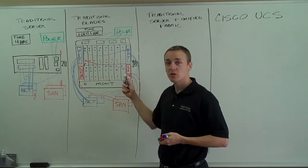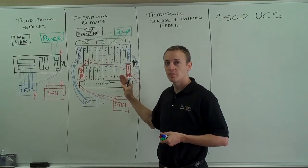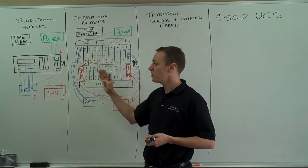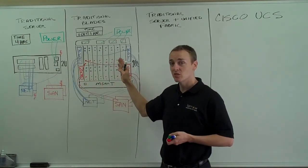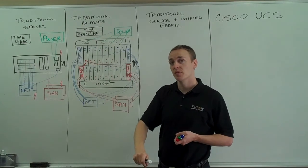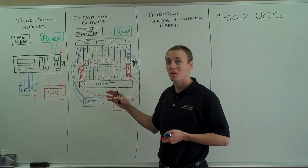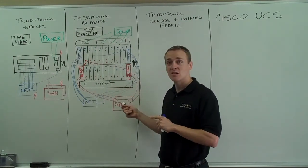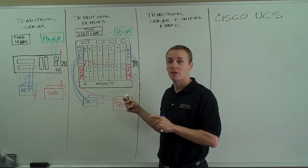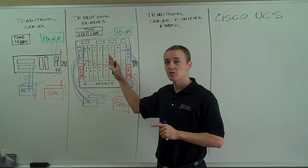Another misconception is that blades are perfect for boot from SAN. In reality, they're not that much more perfect than traditional rack servers. The thought is, if one of these blades goes bad and it's boot from SAN, you pull the blade out, throw another blade in, and magically it's going to boot and everything's fine. In reality, you're going to have to configure the BIOS, configure SAN zoning, and configure things related to MAC addresses and IP addresses. So it's not simply plug and play in a boot from SAN environment.